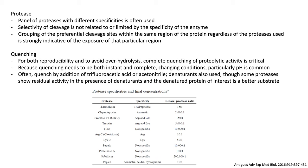Several different proteases are often used, and people will even use panels of proteases with different specificities to get different and overlapping information. The selectivity of cleavage is not limited by the specificity of the enzyme; instead, grouping of preferential cleavage sites within the same region using overlapping sites can help confirm you're really looking at the real accessible site. It's also important to quench the reaction — for both reproducibility and to avoid overhydrolysis, complete quenching of proteolytic activity is critical. Because quenching needs to be both instant and complete, changing conditions, particularly pH, is the most common way, often by addition of trifluoroacetic acid or acetonitrile. Denaturants are also used, though some proteases will show residual activity in the presence of denaturants, so you need to know if you have good quenching conditions.